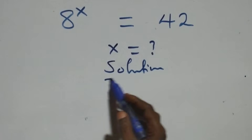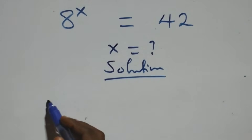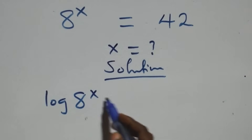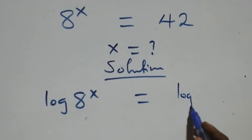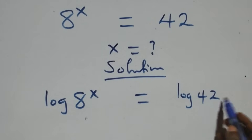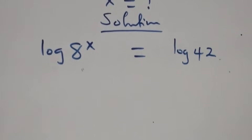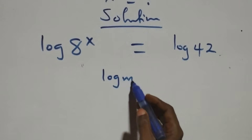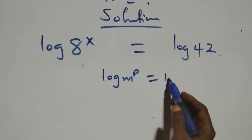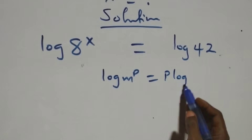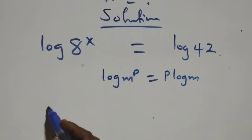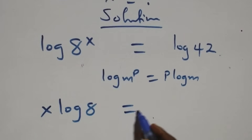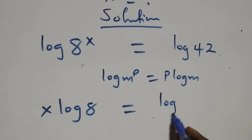What we have here: we take the log on both sides, so we have log of 8 raised to the power x equals log 42. We apply the power law of logarithms, where log m raised to power p is the same as p log m. This gives us x log 8 equals log 42.